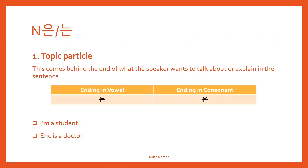So for example, if you want to say 'I'm a student,' the topic is I, myself. So I is the topic of the sentence. You need to say 저는 학생이에요.